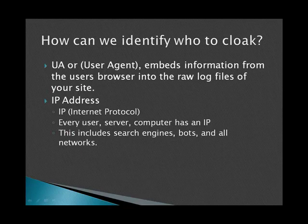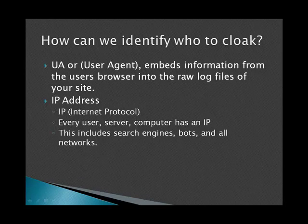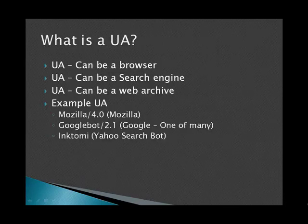So how do we identify who to cloak? Well, the first one is a user agent. The user agent information is embedded from the user's browser into the raw log files of your website. The next one is an IP address — every computer, every device, every server — every time you get on the internet you have an IP address, and I'm going to go ahead and skip right over that.